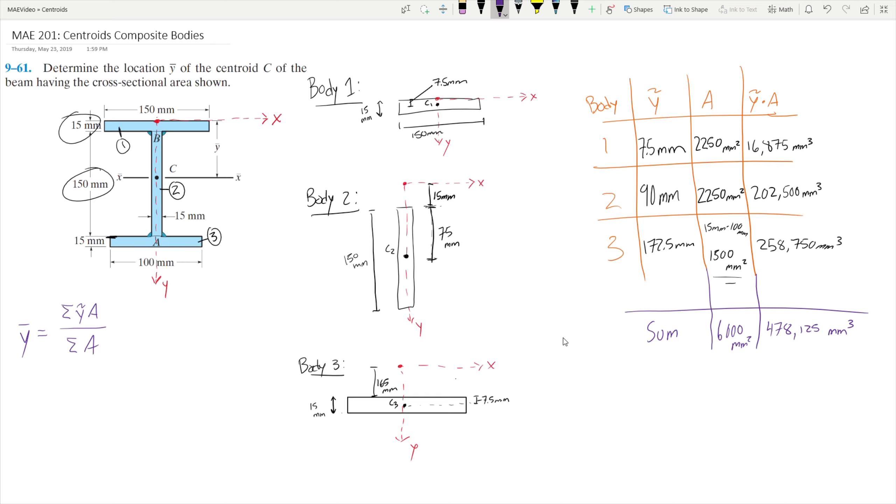Now from here, we know y-bar is just the sum of y-tilde times a divided by the sum of a. So y-bar is simply going to be 478,125mm cubed divided by 6000mm squared. So our y-bar is approximately 79.6875mm. That is our final answer. Thank you.